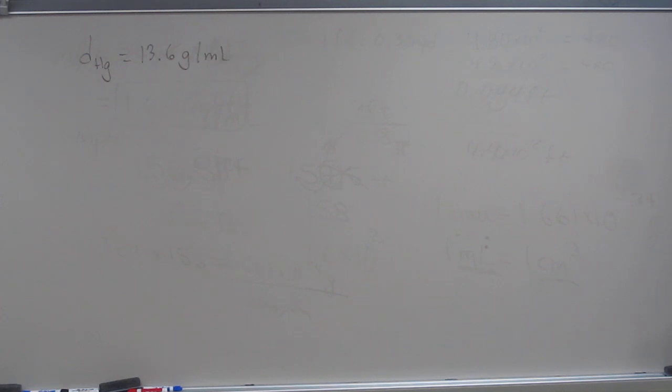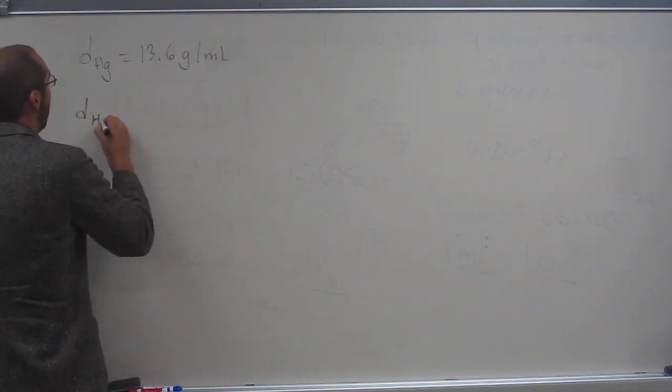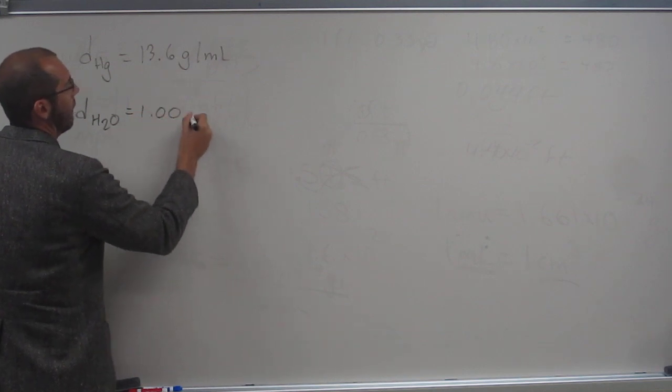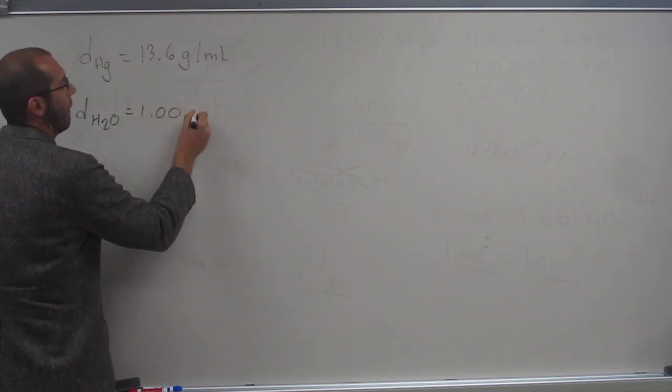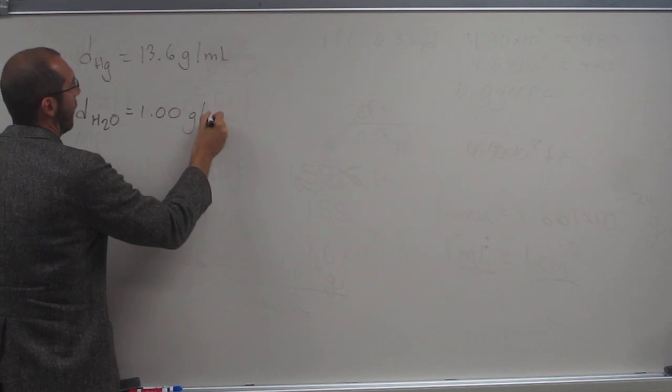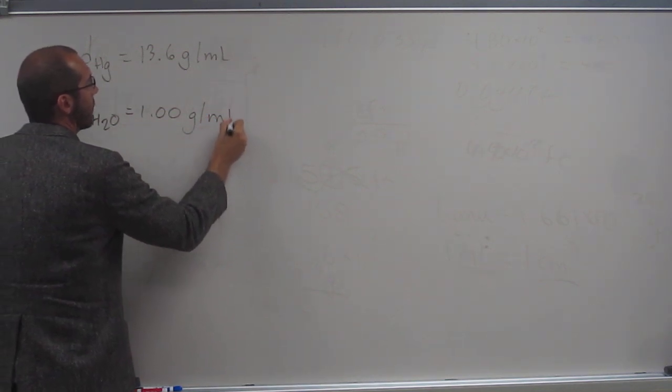So the density of water at 4 degrees Celsius is 1.0... 1.00 grams per milliliter, right.